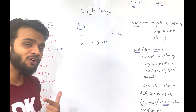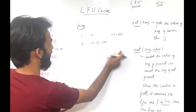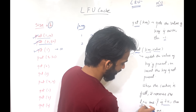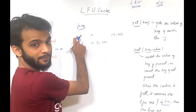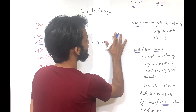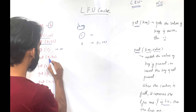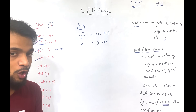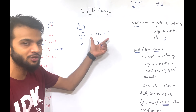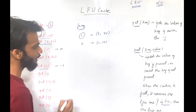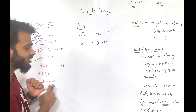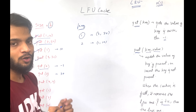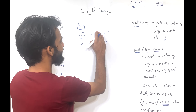Now there is put(3, 30). The cache size is 2 and it's full, so we remove the least frequently used guy — that's key 2 with frequency 1 — and then insert 3 with value 30. Next is get(2): key 2 is no longer in the cache, so we return minus one. Then get(3): key 3 has value 30 so it returns 30, and since we accessed it, the frequency of key 3 increases to 2.